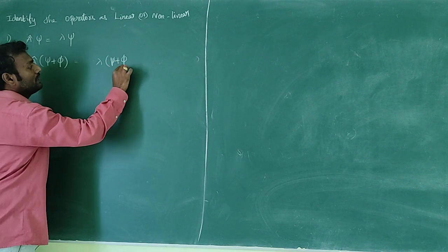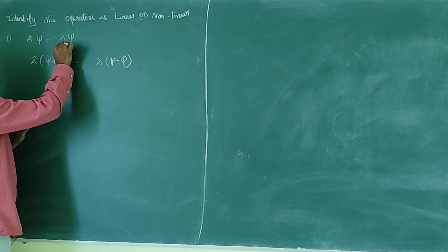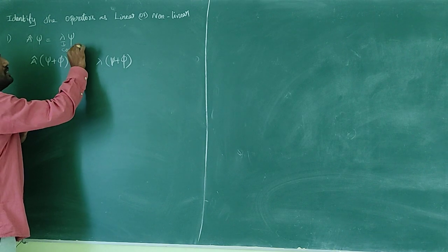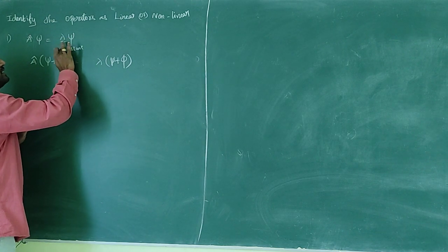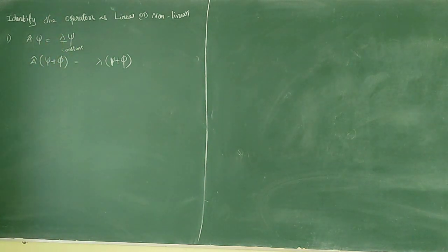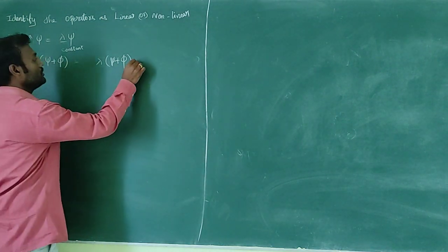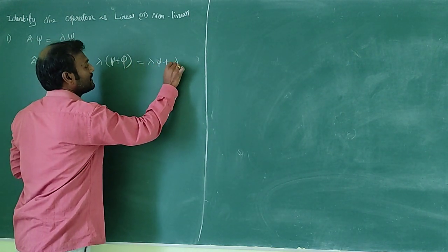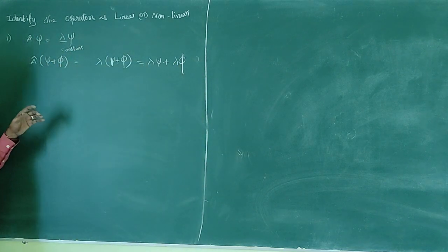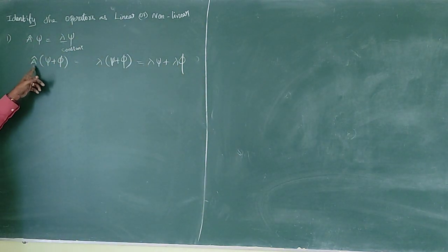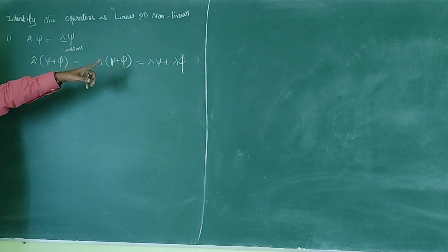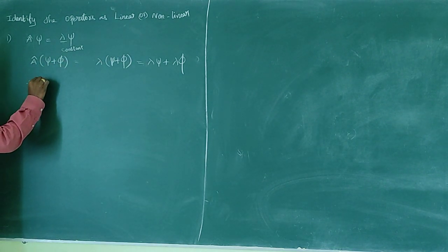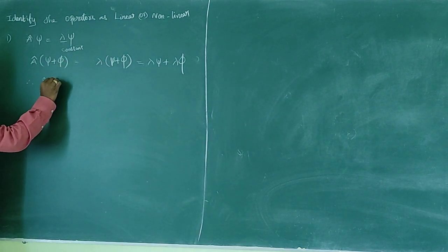So λψ plus ψ — here λ is a constant. We operate: A-cap(C·ψ) gives lambda times C·ψ, which equals C·(λψ). Since both sides are equal — equations 1 and 2 match — A-cap satisfies the constant operation. Therefore, A-cap is linear.